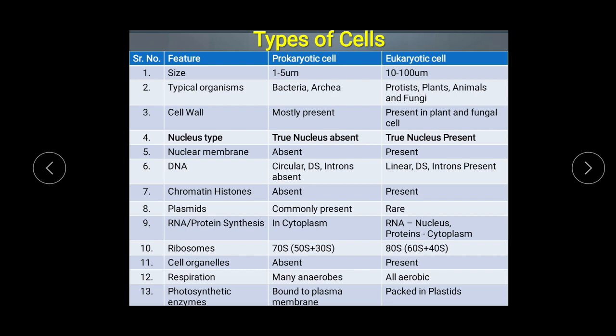The DNA is circular in prokaryotic cells and linear in eukaryotic cells. DNA is with introns in eukaryotic cells and without introns in prokaryotic cells. Histone proteins of chromatin are absent in prokaryotic cells but present in eukaryotic cells. Plasmids are very commonly present in prokaryotes and are useful for recombinant DNA technology, acting as vectors, while they are rare in eukaryotic cells. RNA and protein synthesis both occur in the cytoplasm in prokaryotic cells, while in eukaryotic cells RNA synthesis occurs in the nucleus and protein synthesis in the cytoplasm — this separation exists only due to the presence of the nuclear membrane.